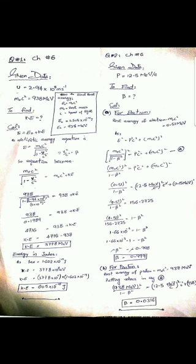Using the given values and calculating — since we used rest energy in mega electron volt — the kinetic energy answer comes in mega electron volt, which is 3778 MeV. To convert mega electron volt to joules: 1 eV = 1.602 × 10⁻¹⁹ J. Multiplying the kinetic energy in MeV by the electron volt conversion factor, the answer will be 6.05 × 10¹⁰ joules.